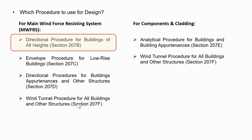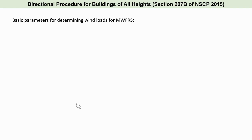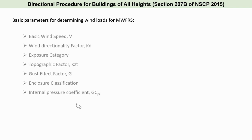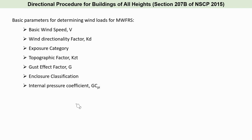Section 207B of the code discusses the directional procedure for enclosed, partially enclosed, and open buildings of all heights. Before we can start our calculation, we need to define at least the basic parameters for MWFRS. These parameters are: the basic wind speed, wind directionality factor, exposure category, topographic factor, gust effect factor, enclosure classification, and internal pressure coefficient. We will be discussing more on these basic parameters as we go on the given example.